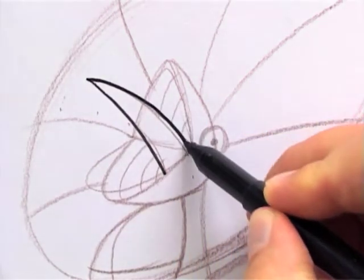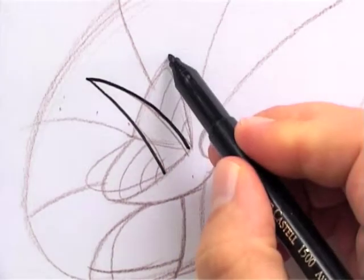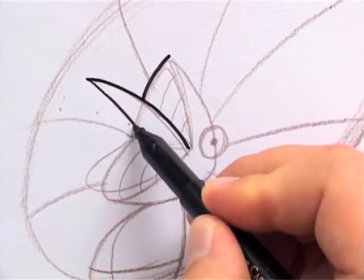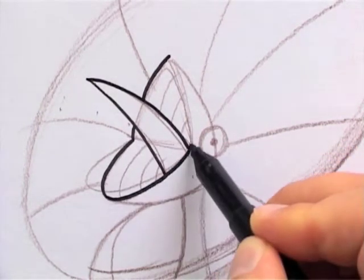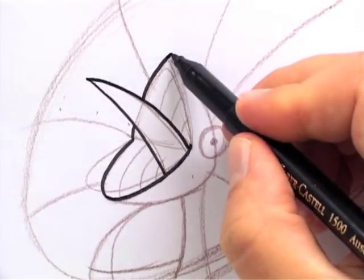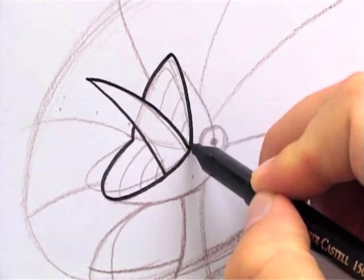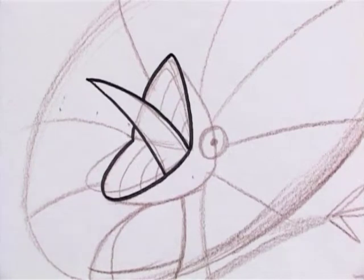Frilled necked lizards are part of the dragon family. When in danger, their impressive red orange frill opens around their neck, making the lizard look twice the size and very scary.